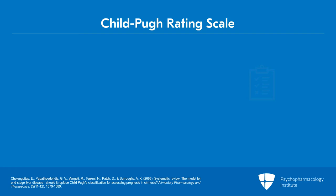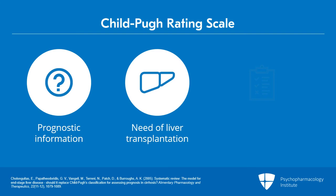It's used for prognostic information and necessity of liver transplantation. There are other scales also used on the liver transplant surface, such as MELD. But as the FDA found out, Child-Pugh is perfect for our purposes in terms of assessing cirrhosis and the extent to which it alters drug metabolism.